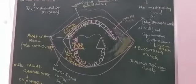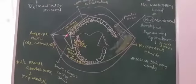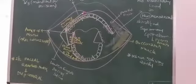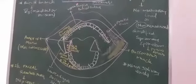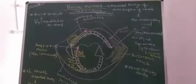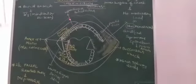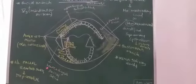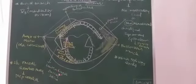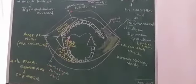And what are the extensions as far as this cheek is concerned? It is from the upper gingivobuccal sulcus - this is the gingivolabial sulcus, this is the gingivobuccal sulcus - upper gingivobuccal sulcus to lower gingivobuccal sulcus. That is the extension from superior to inferior.